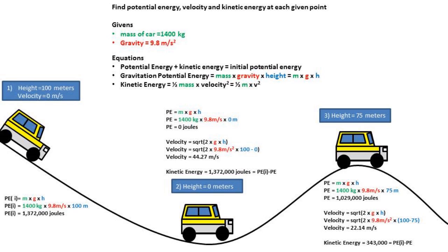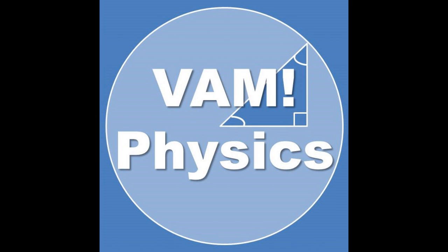Finally, for the kinetic energy at this point, we take the initial potential energy minus the potential energy at this point to get 343,000 joules. That concludes this video. Thank you for watching. Hopefully I earned a like or subscription.